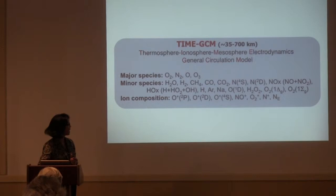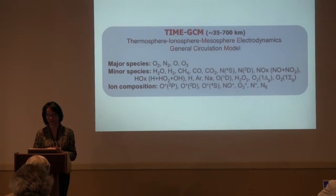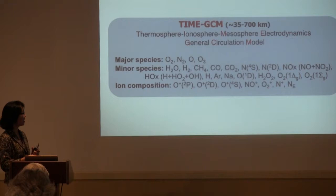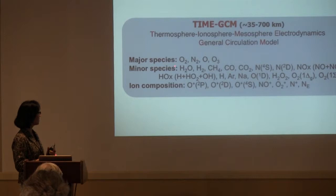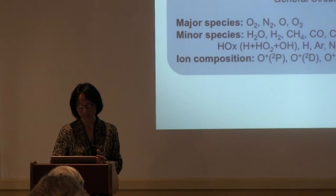TIEGCM stands for Thermosphere, Ionosphere, Mesosphere, Electrodynamic General Circulation Model. It incorporates various photochemical, chemical, dynamical, and electrodynamical processes suitable for the region from 35 to 700 kilometers during solar maximum and about 30 to 500 kilometers during solar minimum. The model also solves four major neutral species, two dozen or so minor species, and a few ion species as well.